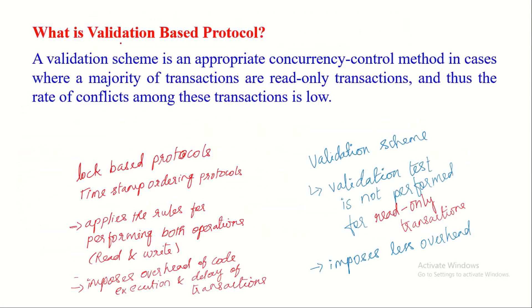A validation based protocol is an appropriate concurrency control method in cases where a majority of transactions are read-only transactions. When the majority of transactions are read-only, the rate of conflict among these transactions is low. So in such cases, this validation based protocol is the most appropriate one.